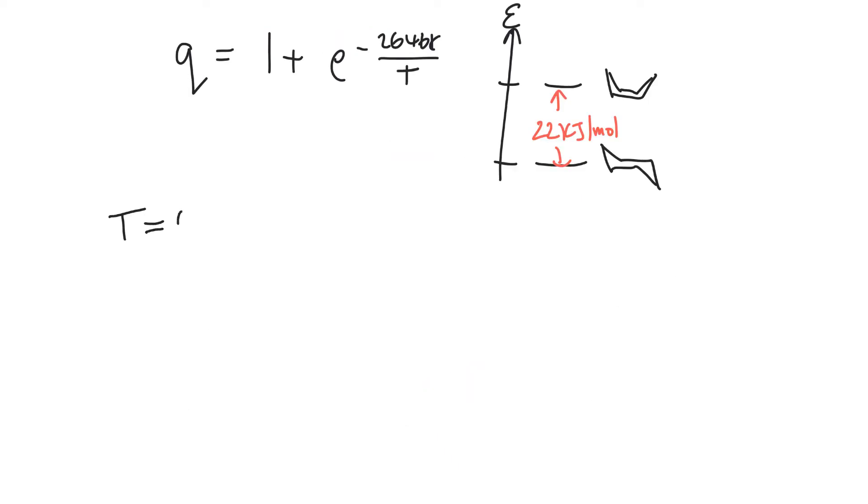And clearly we can see when T is 0 Kelvin, then our partition function is just going to be 1. Because if T is 0, this is E to the minus infinity, and E to the minus infinity is 0. And so we get our partition function of 1. And as we increase the temperature, so as we go to, say, a nice round number here, like 1,000 Kelvin, Q ends up being 1.071.